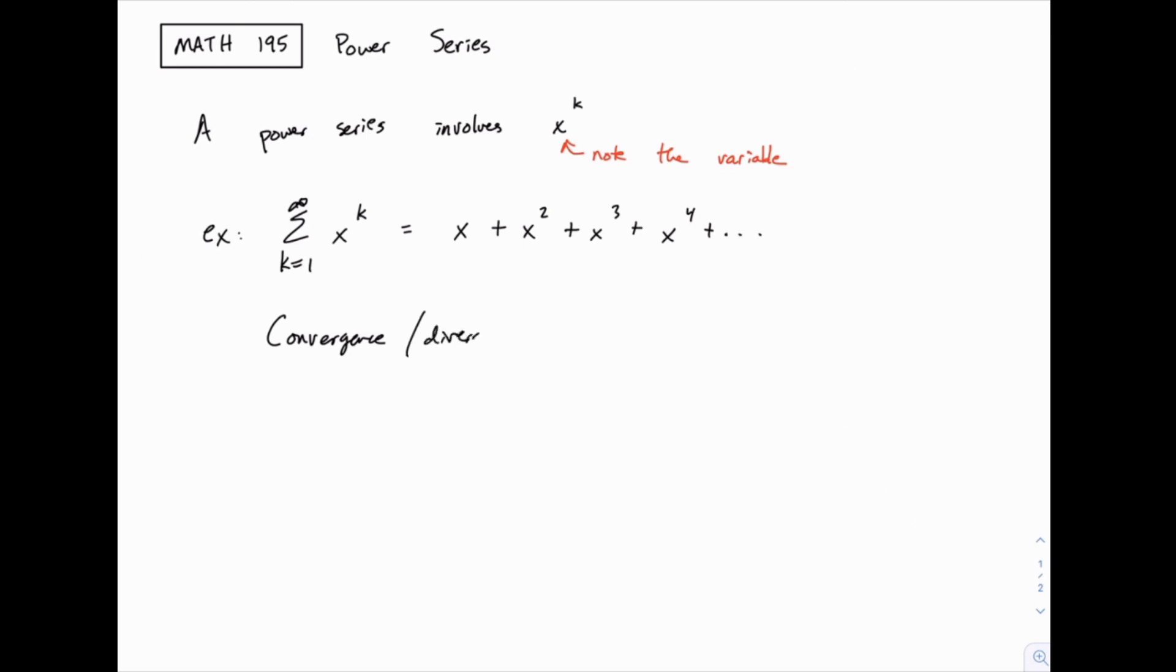For instance, trivially, if x equals 0, you would have 0 plus 0 squared plus 0 cubed, and so on, would all equal 0. So pretty easily you could tell that converges.